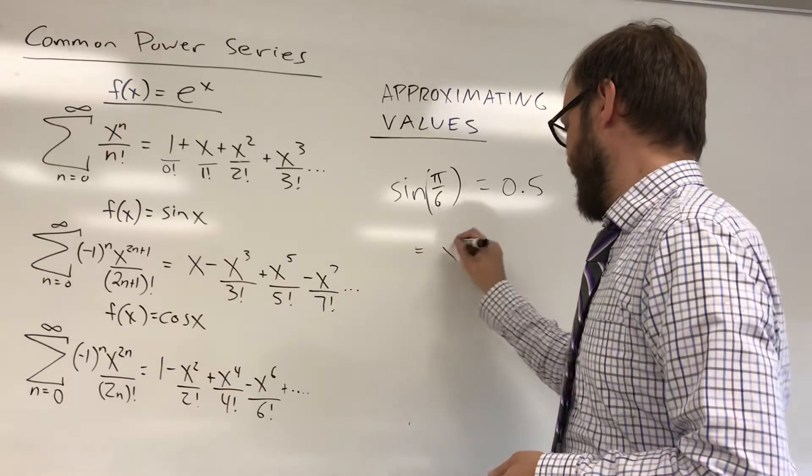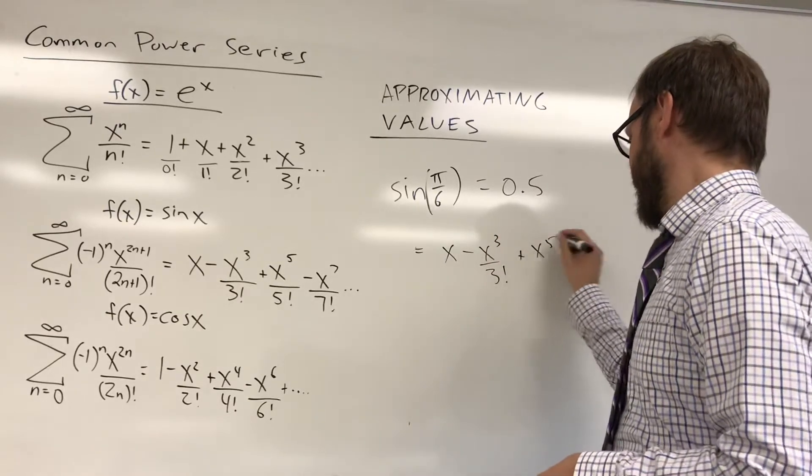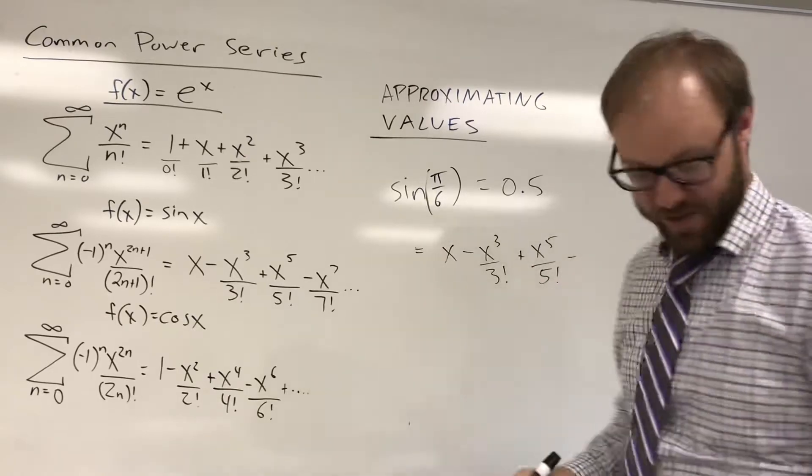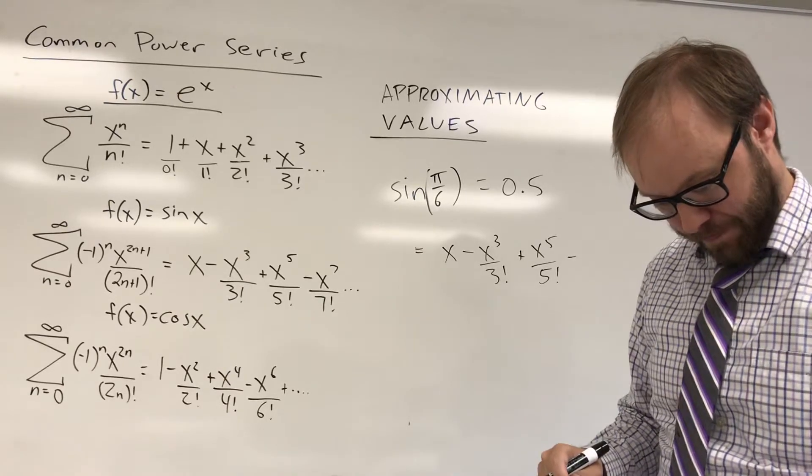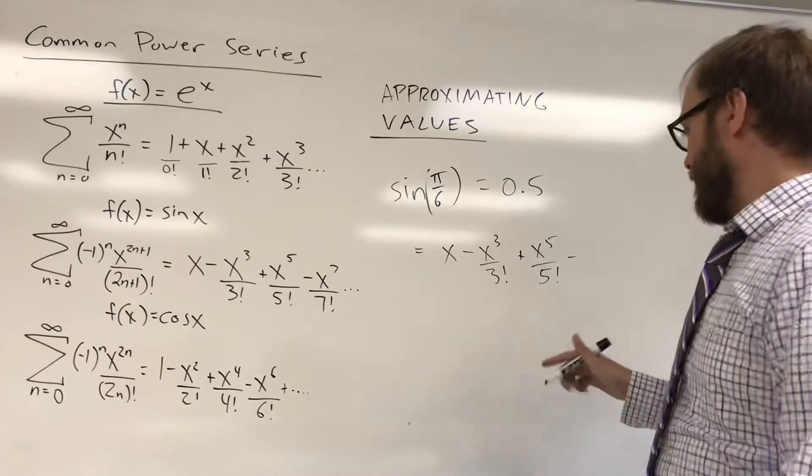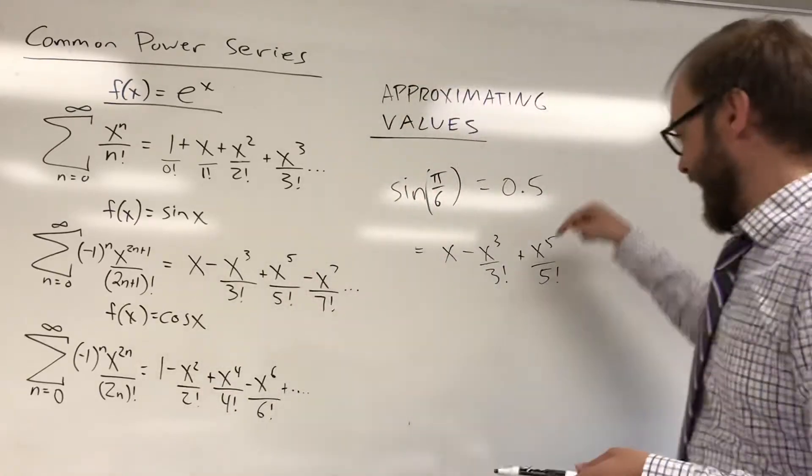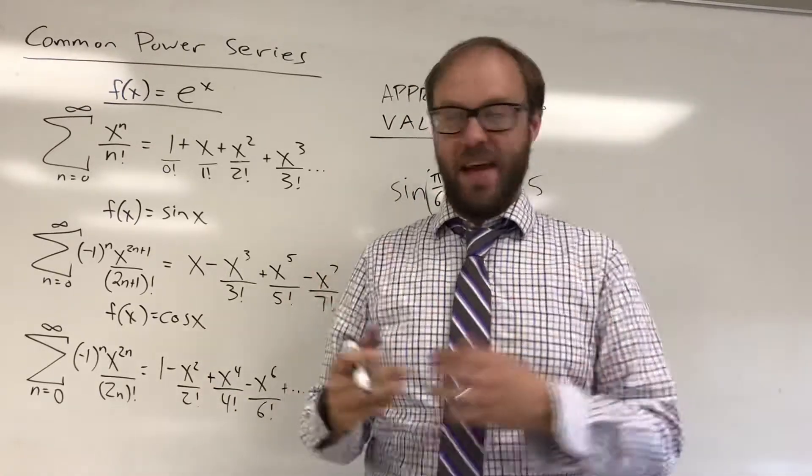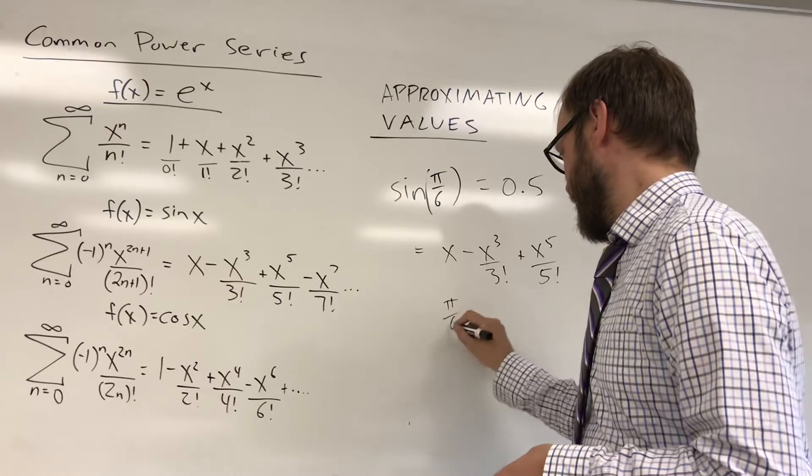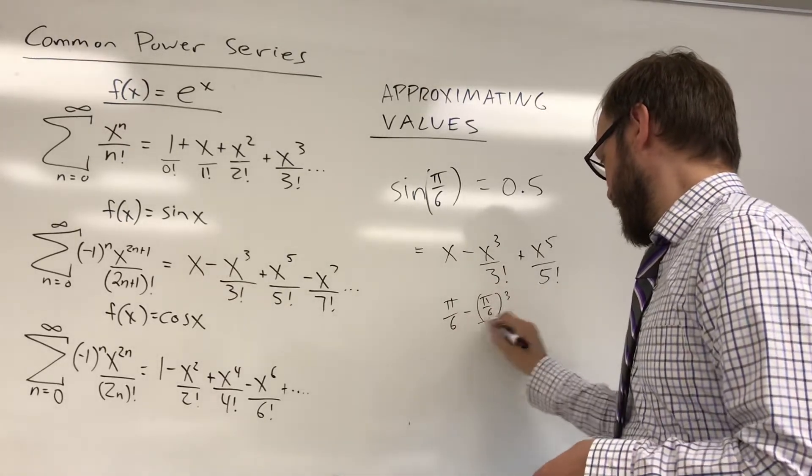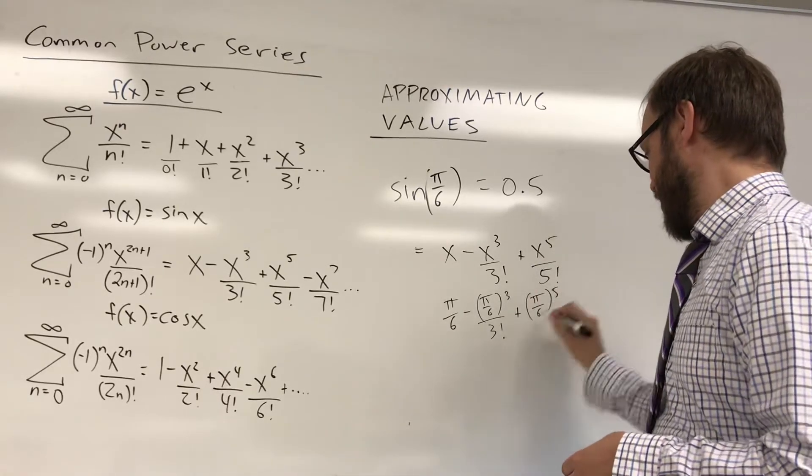But all I need to do is substitute pi over 6 in for the input in my sine series. So sine is alternating sine of odd power. So it's x minus x cubed over 3 factorial plus x to the fifth over 5 factorial minus x to the seventh over 7 factorial and so on. I'm only going to do three terms. This is called a power series, technically fifth degree power series because it goes out to the x to the fifth term. All I'm going to do is put pi over 6 in here. So pi over 6 in place of x minus pi over 6 cubed over 3 factorial plus pi over 6 to the fifth power over 5 factorial.